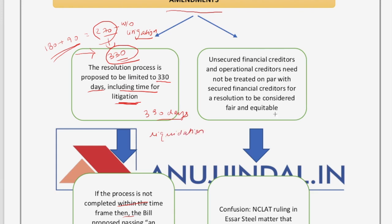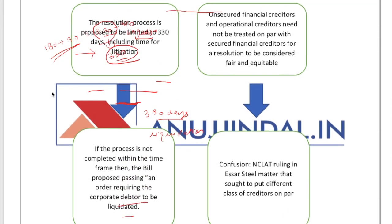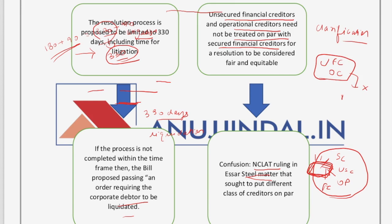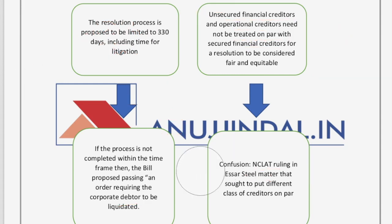The second amendment came because of confusion arising from the SR Steel matter, where NCLAT put different classes of creditors at par — secured creditors, unsecured creditors, operational creditors, and financial creditors were all treated at the same footing. The amendment clarified that unsecured financial creditors and operational creditors need not be treated on par with secured financial creditors.